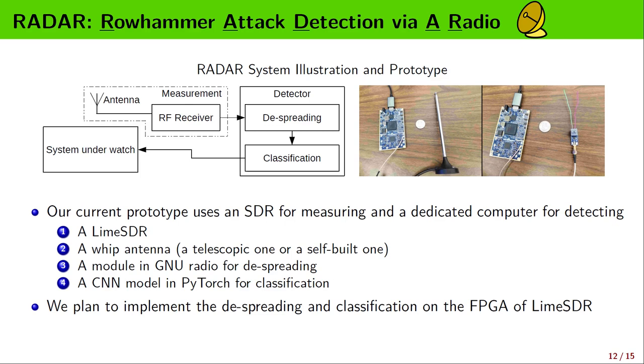Based on the observations and techniques we just described, we make a system named RADAR, which stands for Rowhammer Attack Detection via Radio. In our prototype, we use a software-defined radio LimeSDR to measure the EM signals. The antenna is pretty simple, especially the one showing on the right. Just two pieces of metal wire connect to an antenna band. This can be easily mounted in any computer case. The measured signal is first processed by our de-spreading technique. Then we use the short-time Fourier transform to obtain spectrograms. We use a three-layer CNN model for classification. We continuously stream the spectrograms into the CNN model. The output is the probability of currently being hammered.